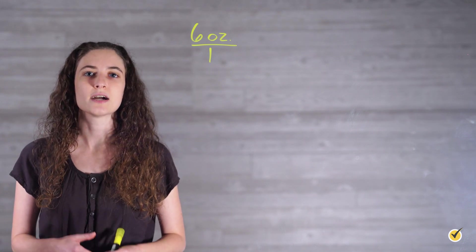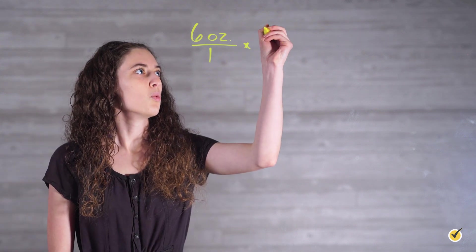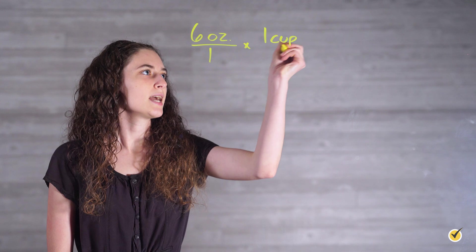Since we have ounces and we are looking for cups, we want to place our cup value in the numerator, and our ounces value in the denominator, so that our ounces units will cancel out, and we will be left with cups. There's one cup, has eight ounces.